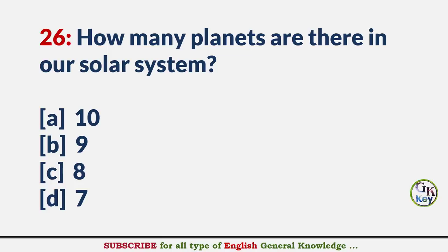How many planets are there in our solar system? Answer C: Eight.